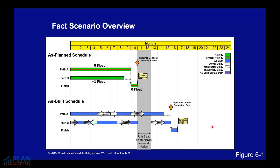The as-built schedule has all kinds of issues. We have six contractor-responsible delays, four owner-responsible delays, a third-party delay, and then we have a month of acceleration.